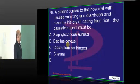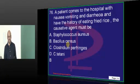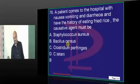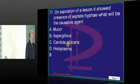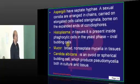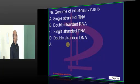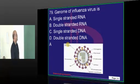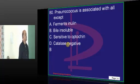Nausea, vomiting, diarrhea after eating fried rice in a Chinese restaurant — Bacillus cereus, is what need to be remembered. Septate hyphae classical of Aspergillus. Enterococcus is group D. Influenza is a single stranded RNA, and then pneumococcus.